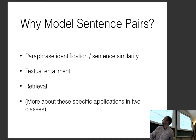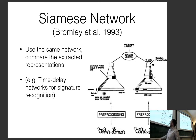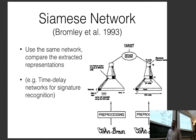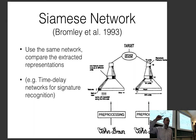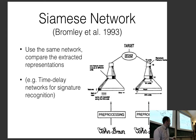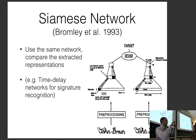One application of convolutional networks is modeling sentence pairs. A very early example is Siamese networks, which use the same network to extract a single vector representing two sentences. You find the nearest neighbor according to the representation — if the representations are close to each other, you say it's a paraphrase; if not, it's not a paraphrase. It's simple: a single convolutional network, extract a vector, calculate a distance measure.